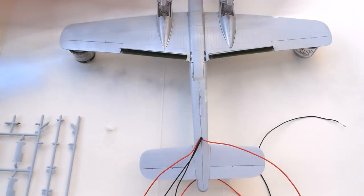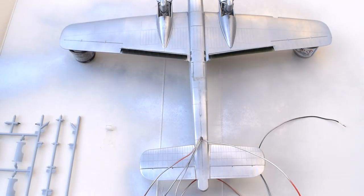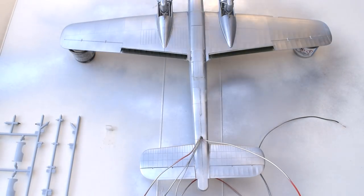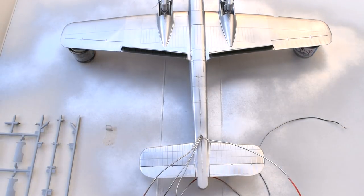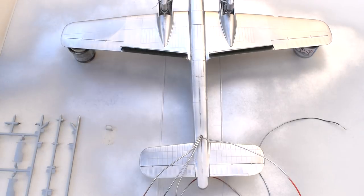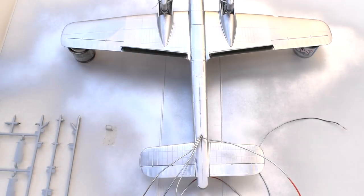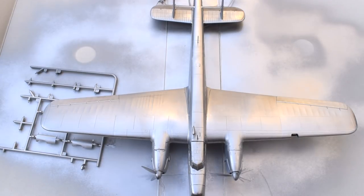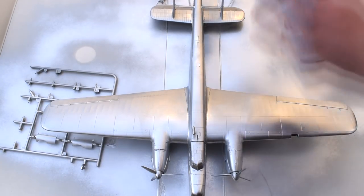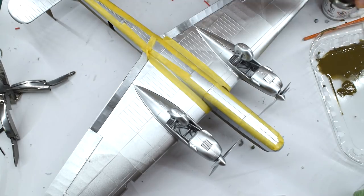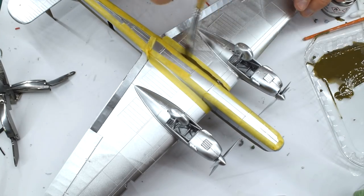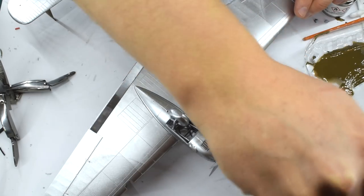Now it's time to give the model a coat of Humbrol 11 acrylic silver spray paint. Some small parts have still been left off and will be added later, such as the landing gear covers. The lower surface of the aircraft will remain in the silver finish, but the top surface will have the silver as a base colour. Here you can see that I've applied masking tape to the aircraft to help ensure that I get a nice, neat line between the top and lower paint schemes.